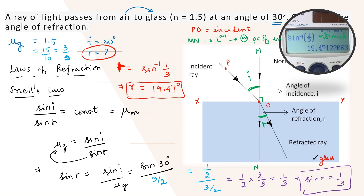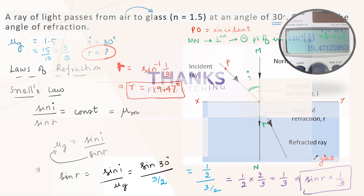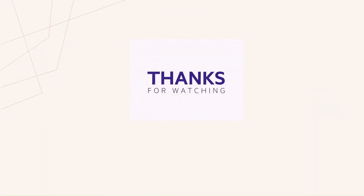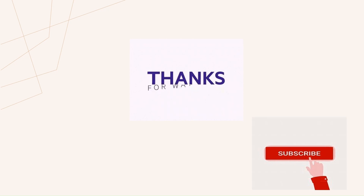So that is finding the angle of refraction using Snell's law, which states sine i by sine r is equal to mu. That is one more concept and one more question completed. If you still have any doubts, you can write them in the comment section and I will make another video to help you understand better. If you have really enjoyed watching and learning, please subscribe to the channel. We will be meeting again with yet another video soon. Bye-bye.